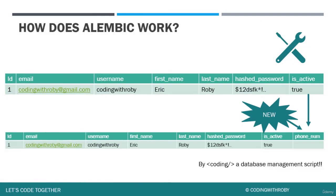The first thing we will be adding in this section is a new phone number column for our user. We will be writing an Alembic script to modify our real-time database to add a new column to our table. After we do that, we will need to go back and enhance our code to handle that new column. But let's stick with how we enhance a database table with Alembic.